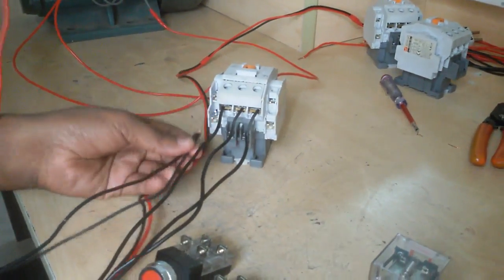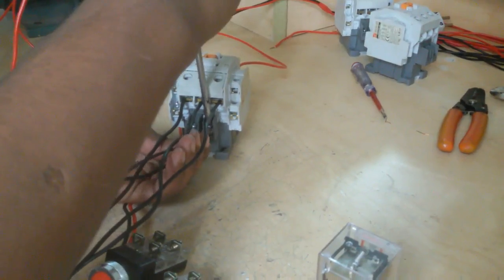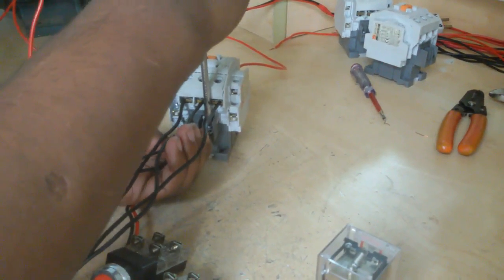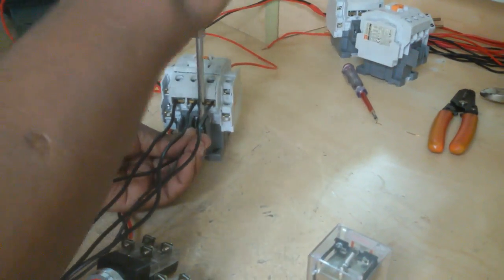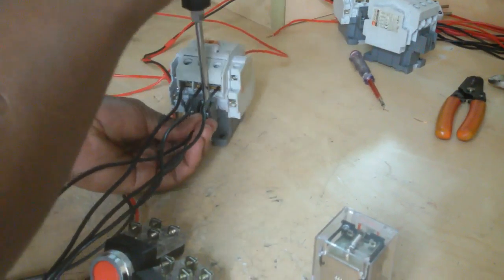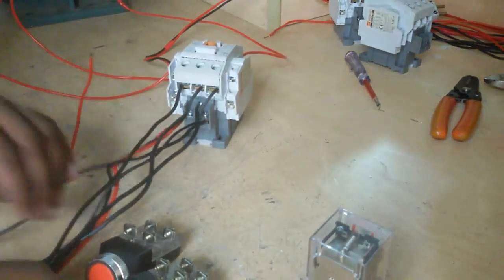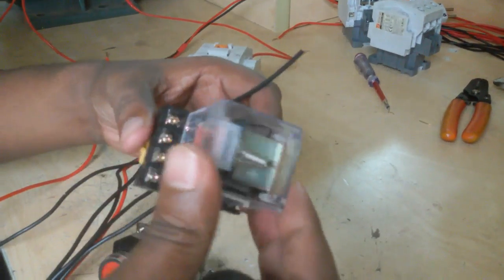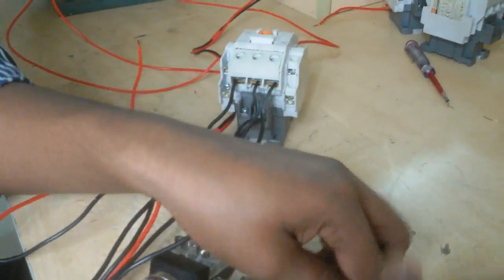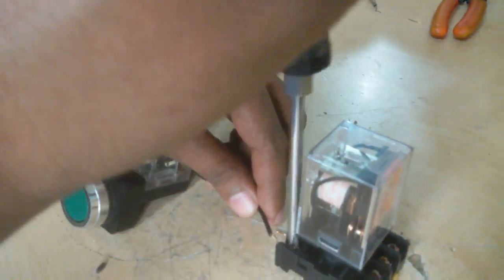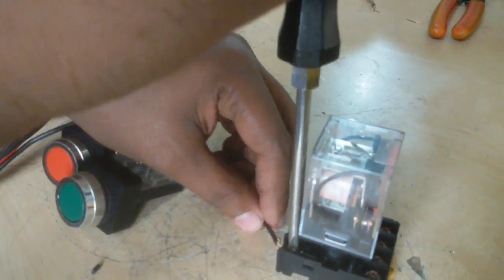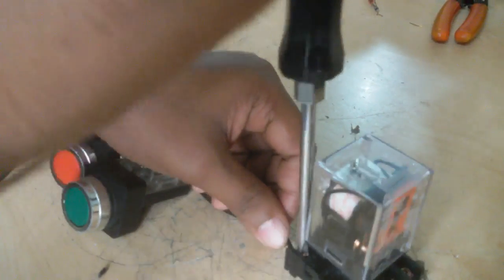First I short this neutral with this contactor A1 coil. And this neutral also short to this relay, relay coil, relay coil terminal 2. I short the relay coil to this terminal. This is the neutral wire.